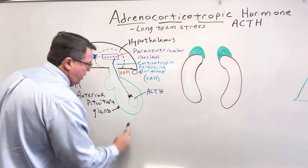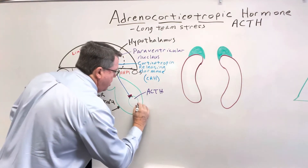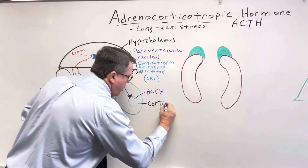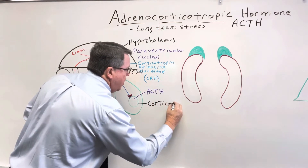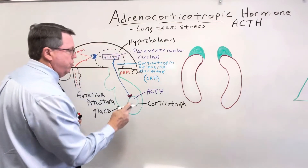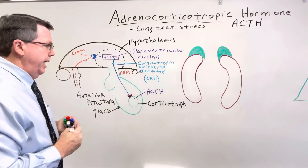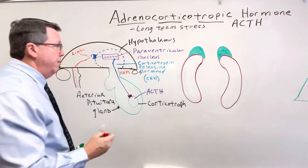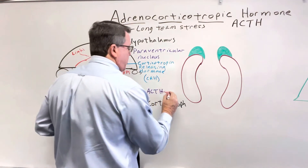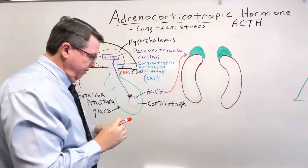Before we go on, there's just one more thing I want to say. This cell right here, we're going to call a corticotroph. So corticotroph cells are going to release ACTH. My ACTH is going to enter the bloodstream and it's going to go up to the adrenal glands.